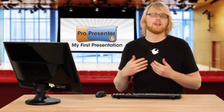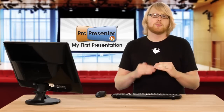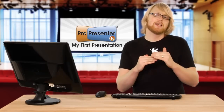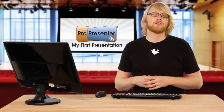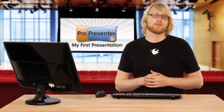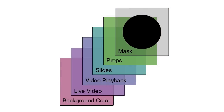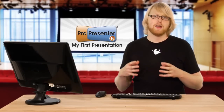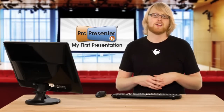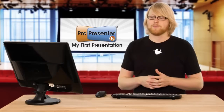ProPresenter uses layers. Much like Photoshop and other layout programs, there are multiple layers that sit on top of each other to create the final image. Inside ProPresenter, there are six different layers available. The first layer is the background color, which is a global setting or a per-document setting, and it defaults to black, so sometimes you don't even realize it's there.